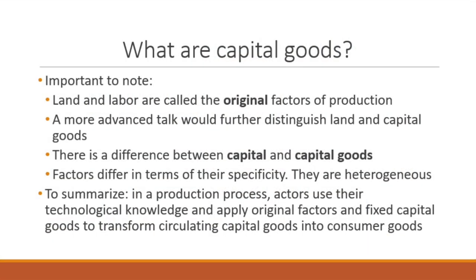To summarize: in a production process, actors use technological knowledge and apply original factors and fixed capital goods to transform circulating capital goods into consumer goods. To make the sandwich, you've got to use your knowledge of how to make a sandwich, your labor, your kitchen space, your tools — your toaster, your knife — and the circulating capital, the food from the grocery store. In about 10 to 15 minutes, you're going to make a sandwich, and then you can enjoy it.